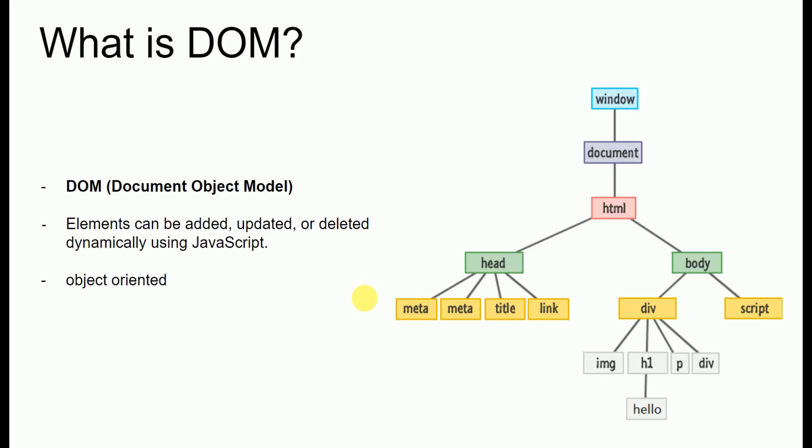DOM stands for Document Object Model and it is an API that is loaded by the browser to represent the HTML code present on a web page as a tree of objects, or node tree. Each node or object in this tree is an HTML element that can be added, updated, or deleted dynamically using a scripting language such as JavaScript. The DOM is also object-oriented in nature, meaning each node has its own properties and methods, which makes it very easy to manipulate.